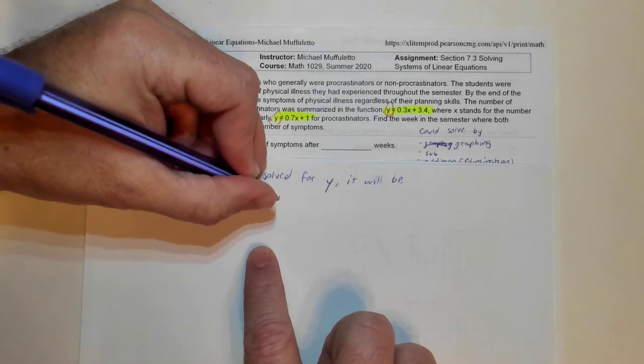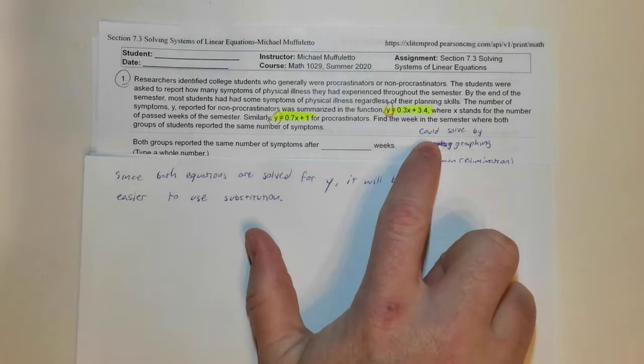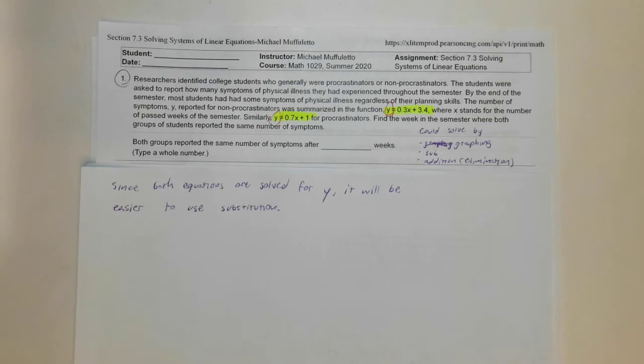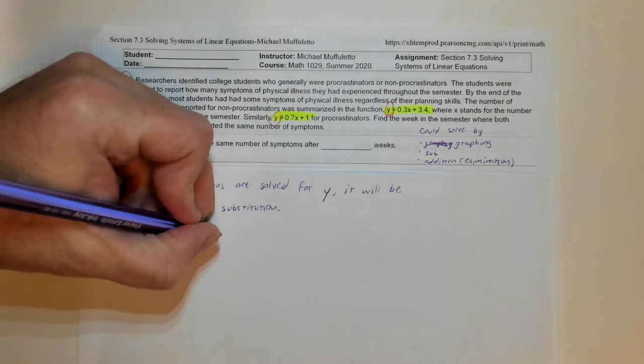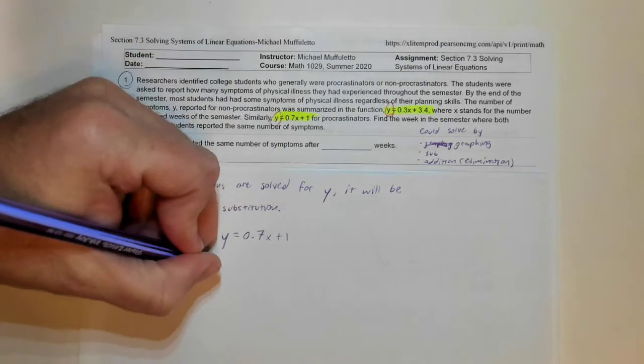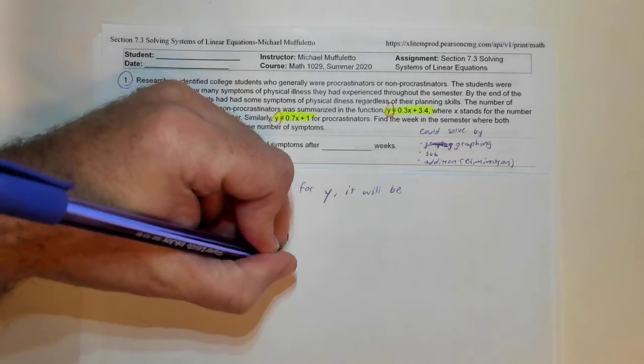You can use elimination, but you would have to first change the order around to get it in the AX plus BY equals C form. Graphing would need graph paper. Since that would require extra steps or a grid, I'm just going to use substitution. So let me write these two down.